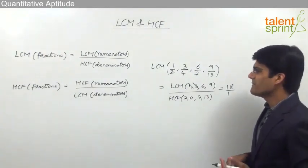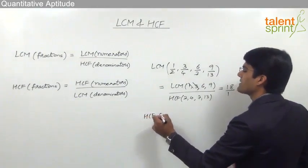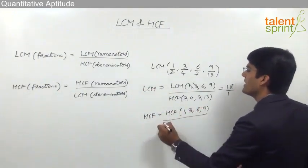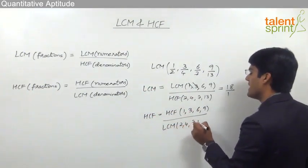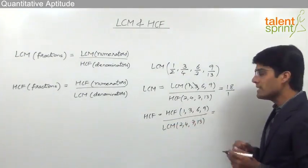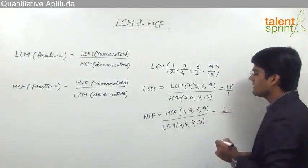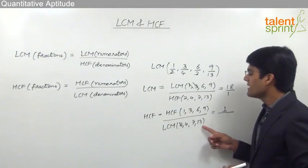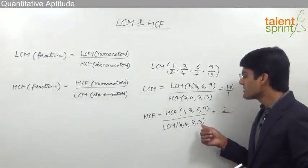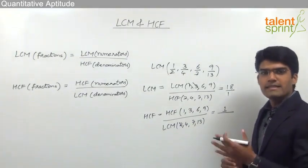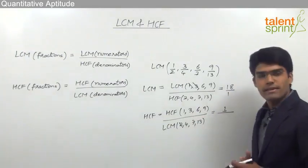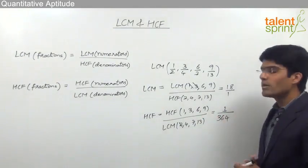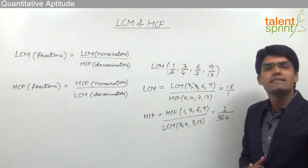Similarly, if the HCF is required, it is HCF of all the numerators — 1, 3, 6, and 9 — divided by LCM of all the denominators — 2, 4, 7, and 13. The HCF of numerators 1, 3, 6, and 9 equals 1. For the LCM of the denominators, we can cancel 2 since it is a factor of 4, leaving 4, 7, and 13. Since 7 and 13 are prime, LCM is 4 × 7 × 13 = 364. So the HCF of the given fractions equals 1/364.